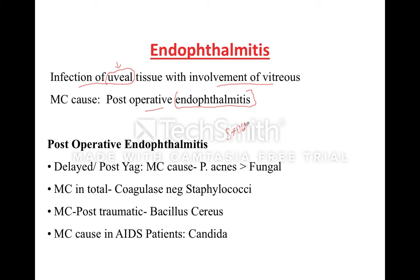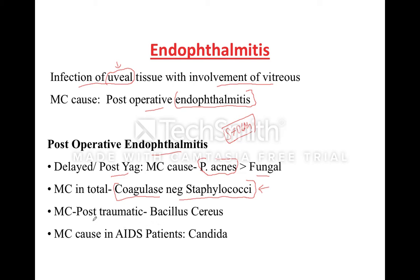Staph aureus and Staph epidermidis are the most common causes of endothalmitis. If they ask the most common cause of delayed or post-YAG endothalmitis, the answer should be Propionobacterium acnes, followed by fungal infection. The most common cause overall is coagulase-negative staphylococci like Staphylococcus epidermidis, followed by Staphylococcus aureus. If Staphylococcus aureus is given in the options but not epidermidis, then mark Staphylococcus aureus.